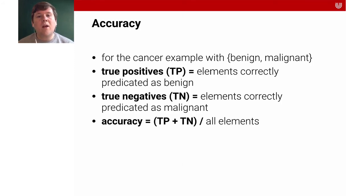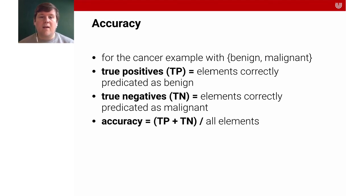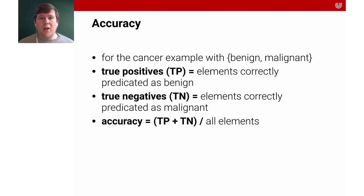Our accuracy is how many of the benign ones we predicted as benign plus how many of the malignant ones we predicted as malignant, over all elements. That's one of the most important metrics in machine learning. We'll also learn others that may be more precise depending on the context and distribution of the data.